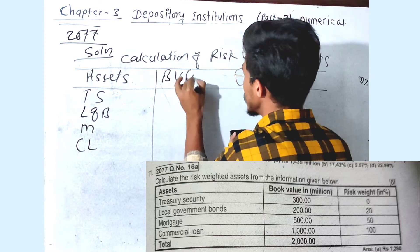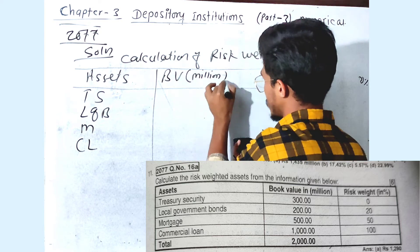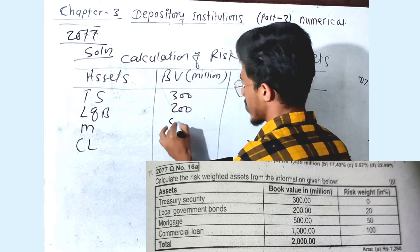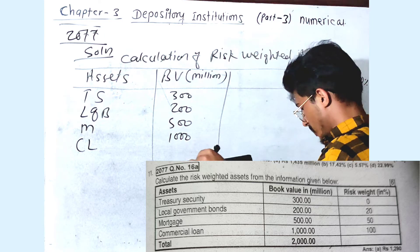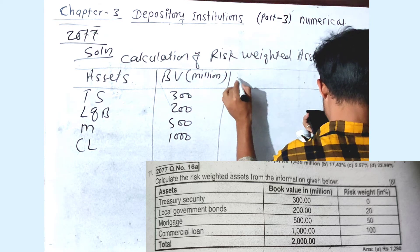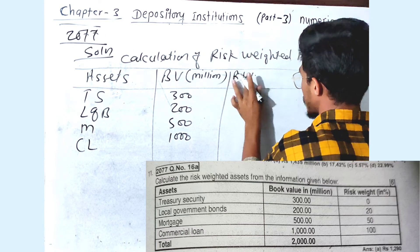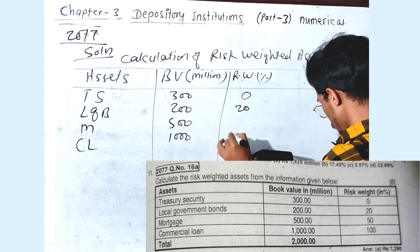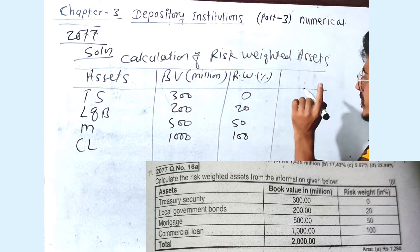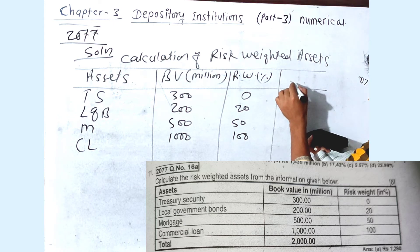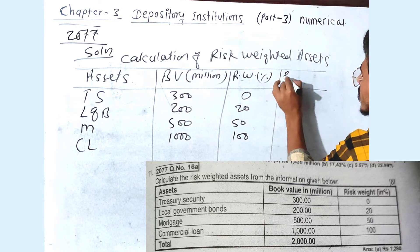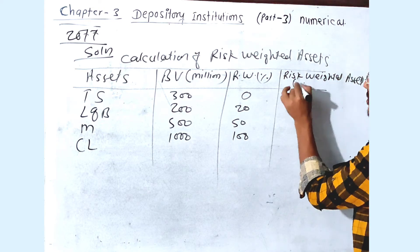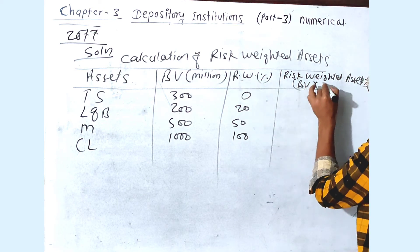The book values in millions are given: 300 million, 200 million, and others. The formula remains: risk-weighted assets equals book value multiplied by risk weight. We apply this for each of the four assets to arrive at the total risk-weighted assets.